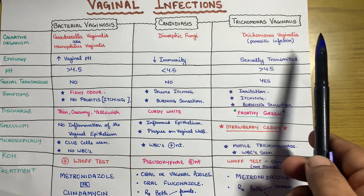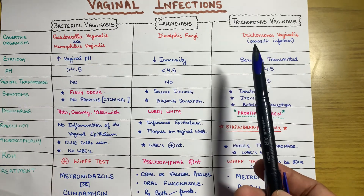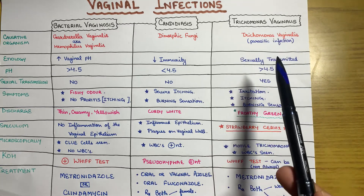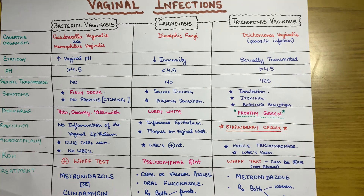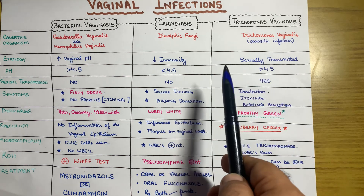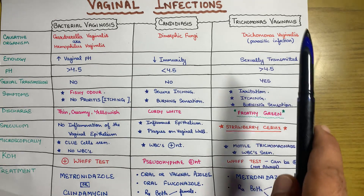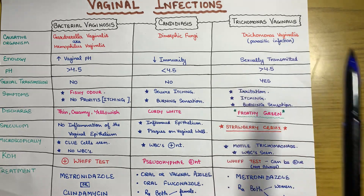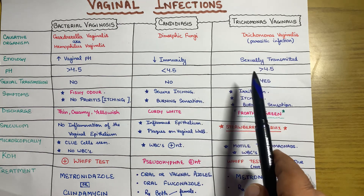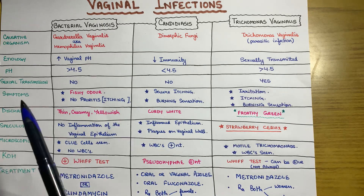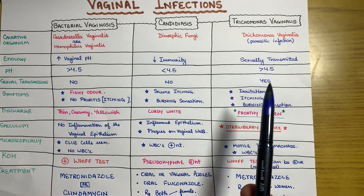Now the third infection: trichomonas vaginalis. The causative organism is Trichomonas vaginalis — a parasitic infection. Regarding etiology, it is always sexually transmitted. Out of these three infections, trichomonas vaginalis is the definitively sexually transmitted one. The vaginal pH is more than 4.5.